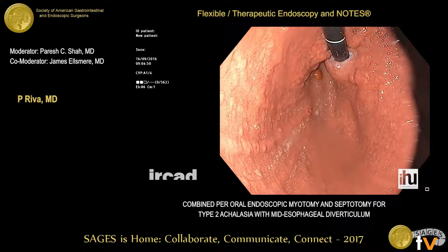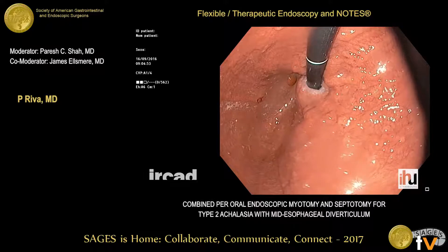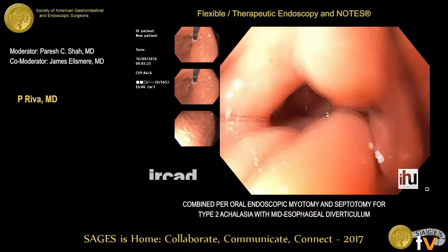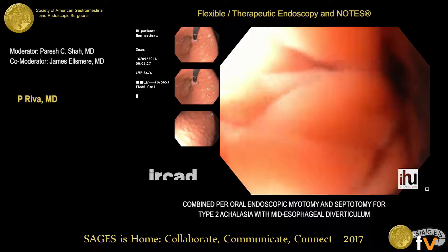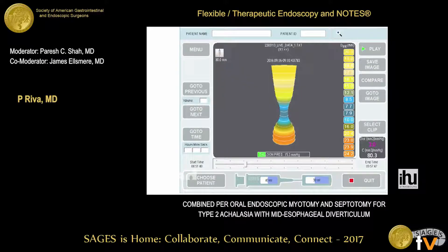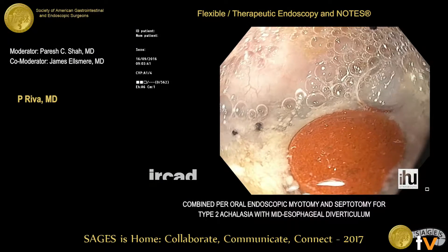The patient is supine under general anesthesia and we used CO2 insufflation. An initial endoscopy is carried out to rule out any esophageal or gastric disease and to take the initial measurements. We used the EndoFLIP impedance planimetry catheter to assess the distensibility and compliance of the tissues.